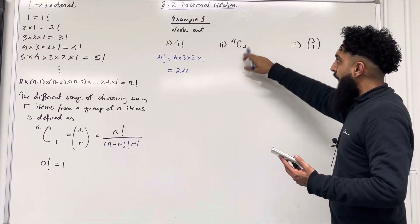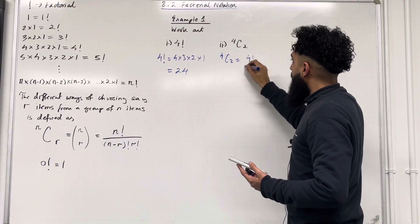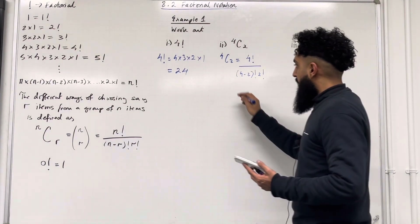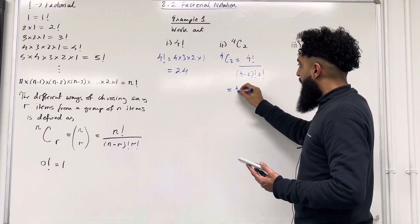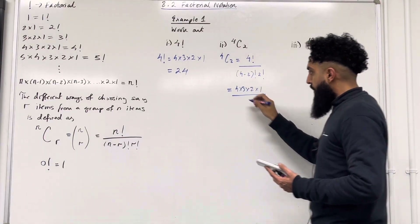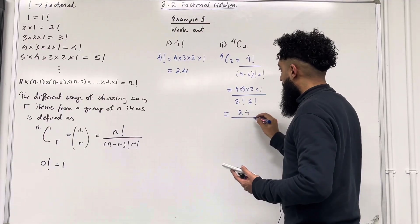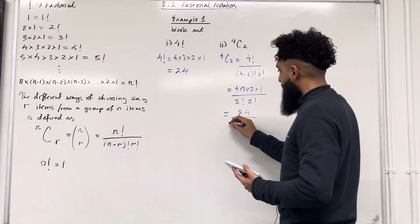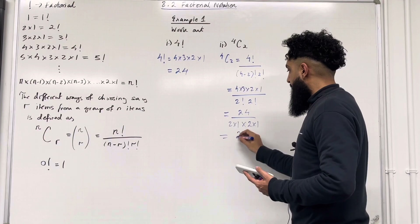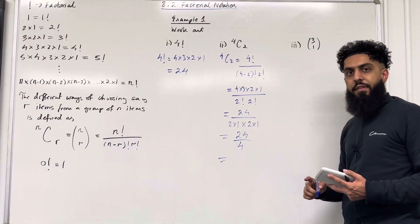Moving on to part 2. I need to calculate 4 choose 2. By definition, 4 choose 2 is 4 factorial over (4 minus 2) factorial times 2 factorial. This is 4 times 3 times 2 times 1 over 2 factorial multiplied by 2 factorial. The numerator is 24; 2 factorial is 2 times 1. So we have 24 over 2 times 1 times 2 times 1, which is 4. Therefore 24 divided by 4 is 6.